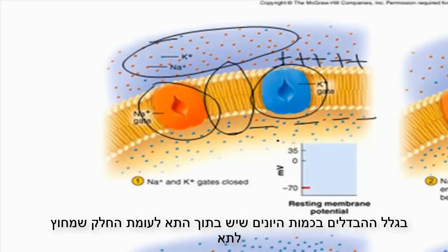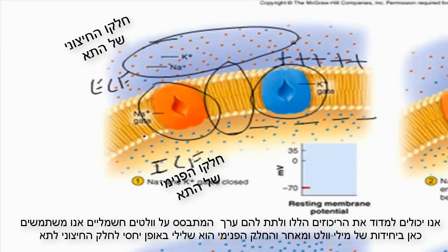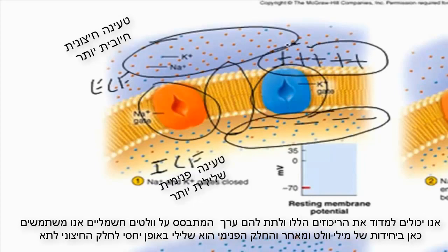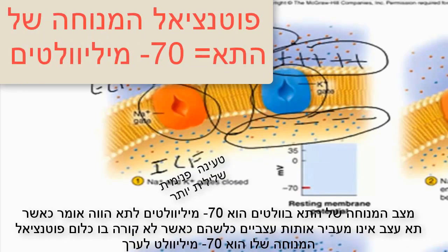Because there is a specific amount of charges inside the cell versus outside the cell — the intracellular fluid versus the extracellular fluid — we can measure these charges and give them a value based on voltage, using millivolts as the units. Because the inside of the membrane is relatively negative to the outside, the resting membrane potential for a neuron is minus 70 millivolts. So when a neuron isn't firing an action potential or a nerve impulse, its resting membrane potential is about minus 70 millivolts.